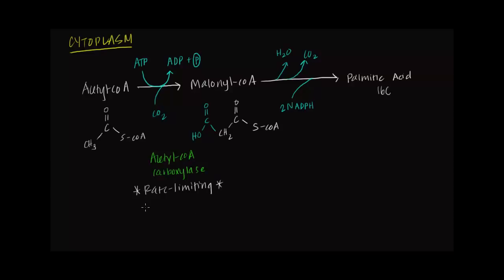Because the overall rate of fatty acid synthesis is limited by acetyl-CoA carboxylase, it makes sense to regulate whether this step is on or off. This is done via allosteric regulation — a specific molecule binds to a non-active site portion of the enzyme to make it work better or worse — as well as hormonal regulation.